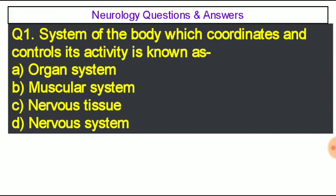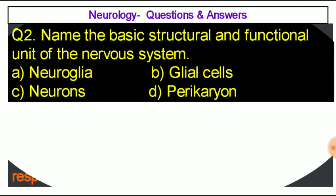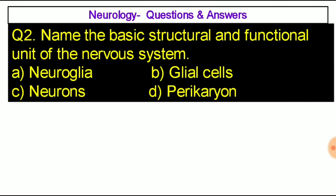Question number one: The system of the body which coordinates and controls its activity is known as — option A: organ system, option B: muscular system, option C: nervous tissue, option D: nervous system. The correct answer is option D, the nervous system. The nervous system is the one which is responsible for all activities of the body.